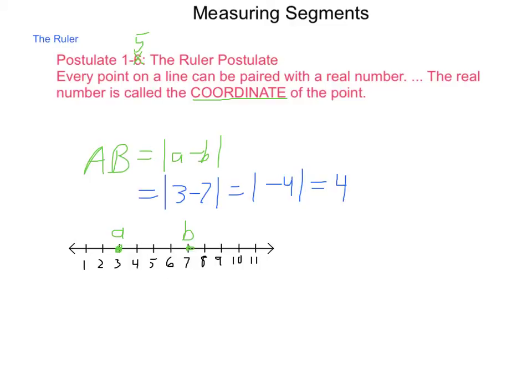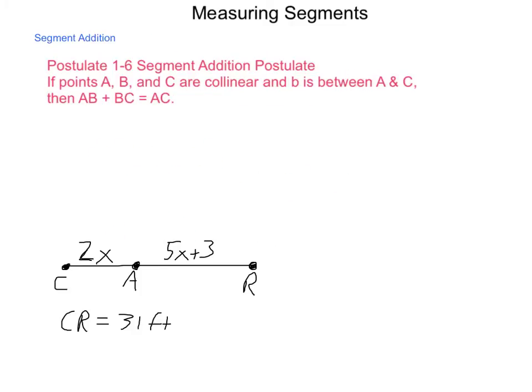So let's go and talk about postulate 1-6 is called the segment addition postulate. So if points A, B, and C are collinear, so we have a single line here, and we have A, B, and C in such a way that B is between A and C, then the section AB plus the section BC is equal to the entire length AC.